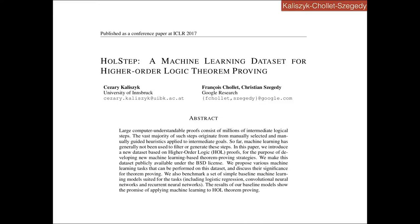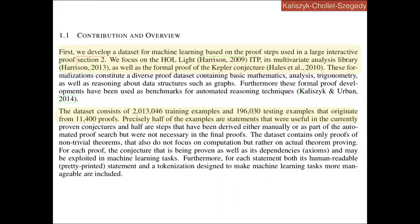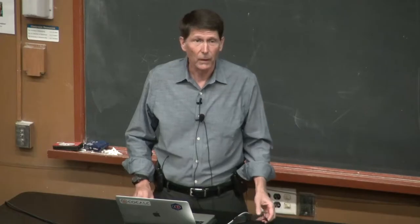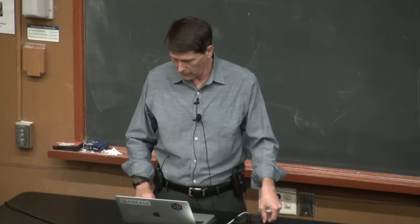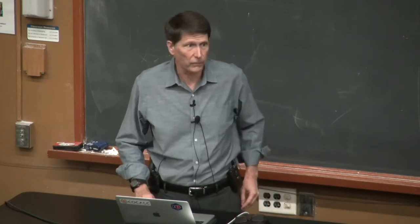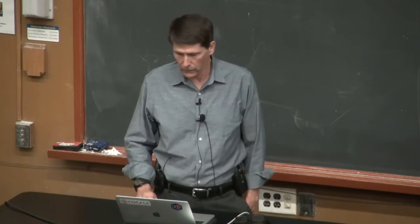and Christian Szegedy at Google have taken the formal proof of the Kepler conjecture and broken it up into a bunch of little pieces that can be used for machine learning. So in their paper, they write, we focus on the HOL Light interactive theorem prover, its multivariate analysis library, as well as the formal proof of the Kepler conjecture. The data set now consists of more than two million training examples. So this is one direction of application of the formal proof of the Kepler conjecture.